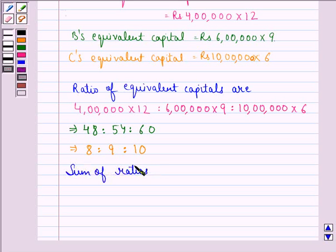Now we see that sum of the ratios is equal to 8 plus 9 plus 10 that is equal to 27. Also it is given to us in the question that total profit is Rs. 5 lakh 40,000.